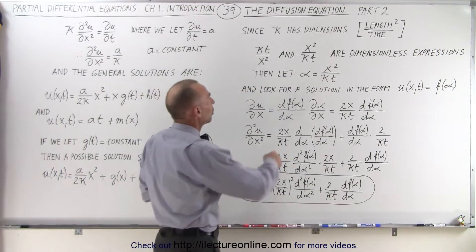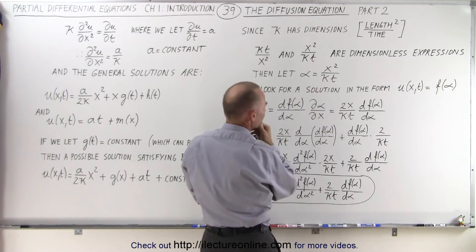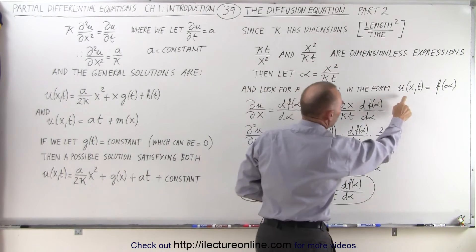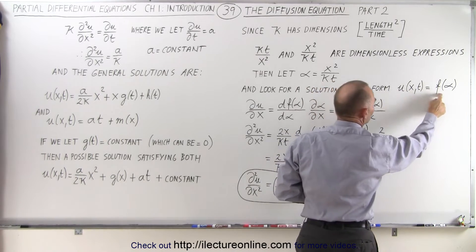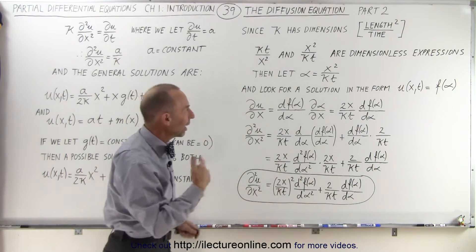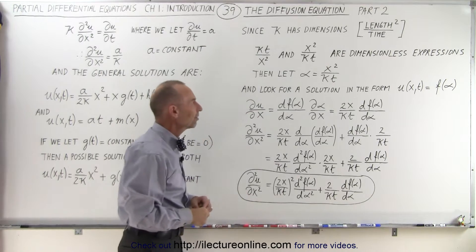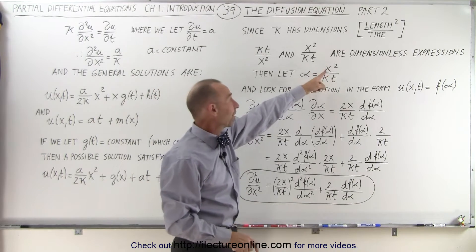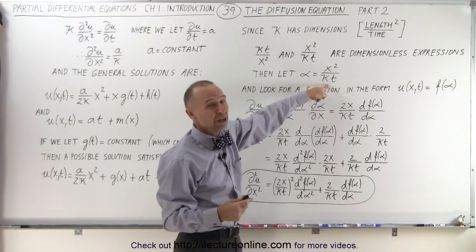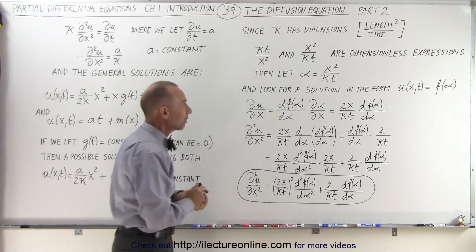Let's call a new variable alpha equal to x squared over k times t. We know that this is dimensionless. We're going to look for a solution in the form where u is equal to some function of alpha, rather than a function of another variable as we did before. Alpha takes the form x squared over k times t. If we then take the second partial derivative of u with respect to x, the x disappears and we just end up with a constant — which is exactly what we want.